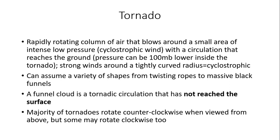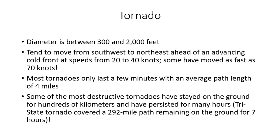The majority of tornadoes tend to rotate in a counterclockwise manner if viewed from above, but there have been some cases where tornadoes rotate clockwise as well. The diameter is generally between 300 and 2,000 feet — the widest and longest-tracked tornadoes usually cause the most considerable damage. They tend to form and move from southwest to northeast, ahead of advancing cold fronts, moving at speeds of 20 to 40 knots. Some tornadoes have moved as fast as 70 knots, which is why you need to take shelter immediately when a tornado warning is issued.